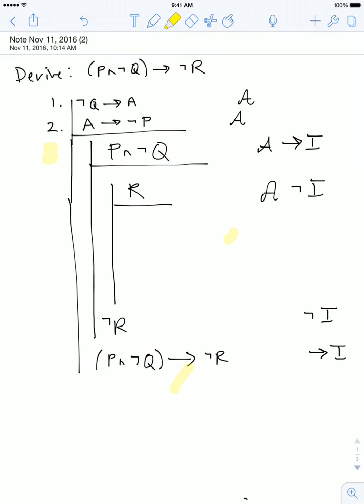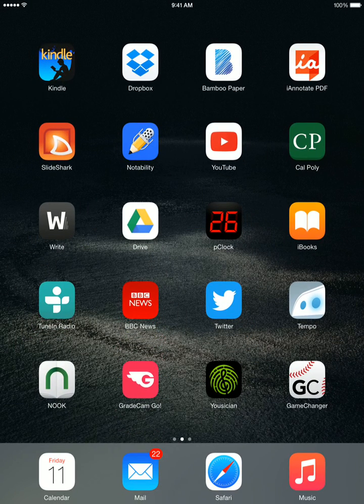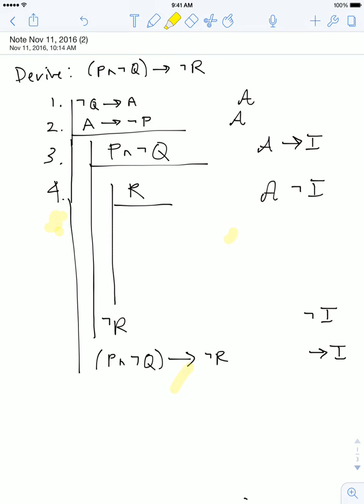So this is going to be line 3. Line 3 just is going to be that assumption so that we eventually can write down our material conditional. Line 4 is going to be that assumption, R, so we can do the negation introduction. And now what I'm going to try to do is in here, I'm going to try to derive P and also not P. The first part of that is super simple because I can just write down the letter P